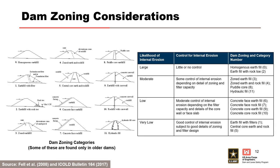Dam zoning can be grouped based on their capability of providing control for internal erosion in the embankment. This is based on the provision for, or lack of, filters and statistics of failure and incidents in Foster et al. 2000. It does not take account of details of dam zoning, design, and construction, and therefore it's only a general guide.